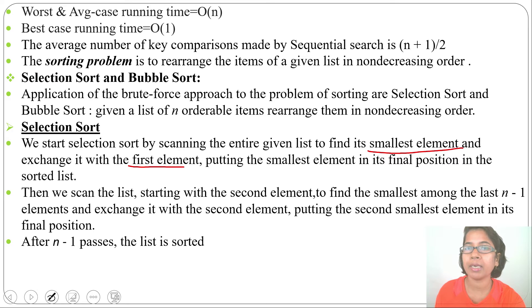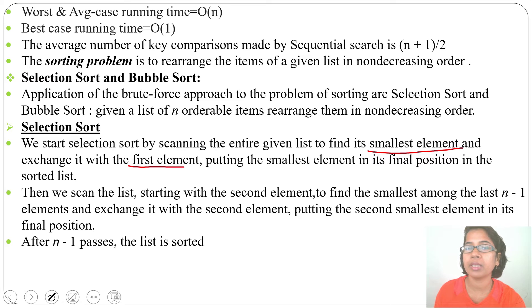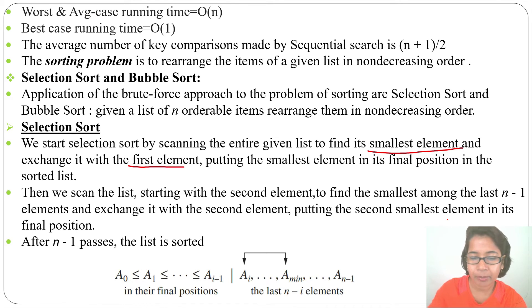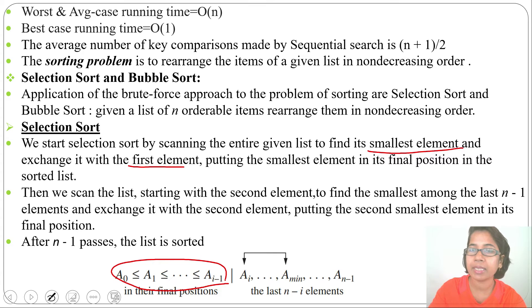What we are doing is selecting the smallest element and swapping it into its correct position: first smallest swaps with position one, second smallest with position two, third smallest with position three, and so on. At any point in the array, the elements already placed are in their final sorted position. From the remaining unsorted portion, we find the minimum and swap it with the current index position.